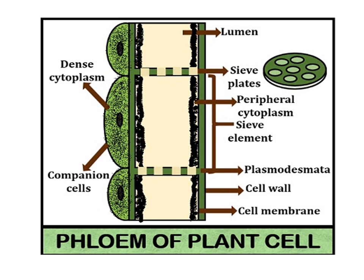Here you can see the plasmodesmata. Plasmodesmata are the cytoplasmic strands which link the sieve tube and the companion cells. Cell wall is the outermost covering of the sieve tube; the cell wall provides resistance to the sieve tube from the high pressure. Cell membrane is the phospholipid bilayer membrane which is present interior to the cell wall; it also holds the sap inside the tube and pumps solutes in and out of the sieve tube.